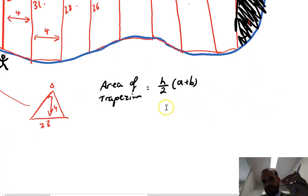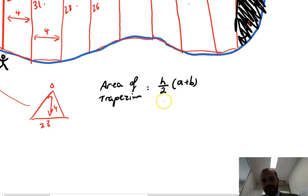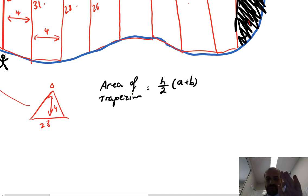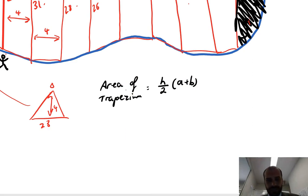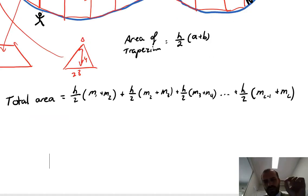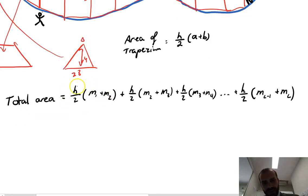There are a lot of different ways to express the area of a trapezium, but the one I'm going to use is: height over 2 times (a + b). That's my formula for the area of a trapezium. Now, what about the formula for the area of all of these trapeziums? The total area equals the area of the first trapezium, which is h over 2 times (measurement 1 + measurement 2).